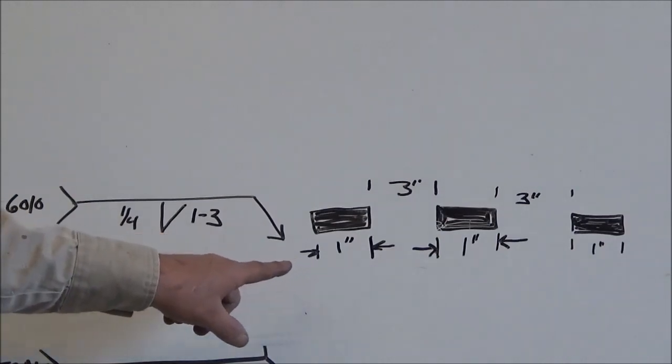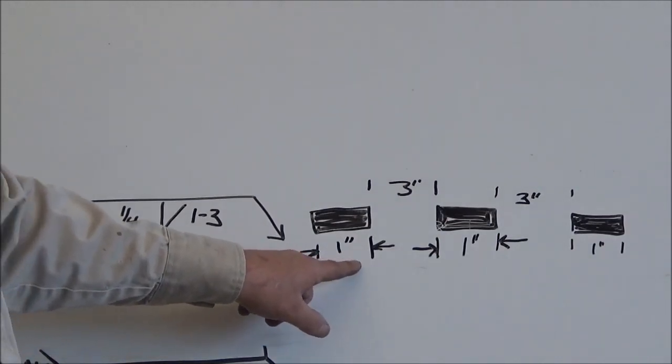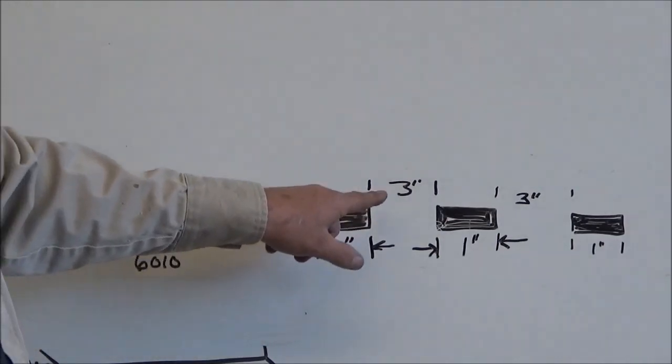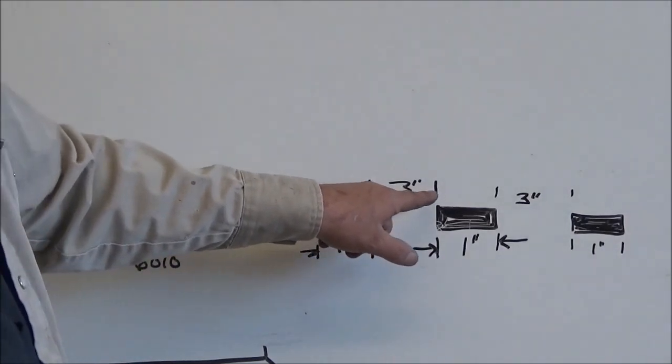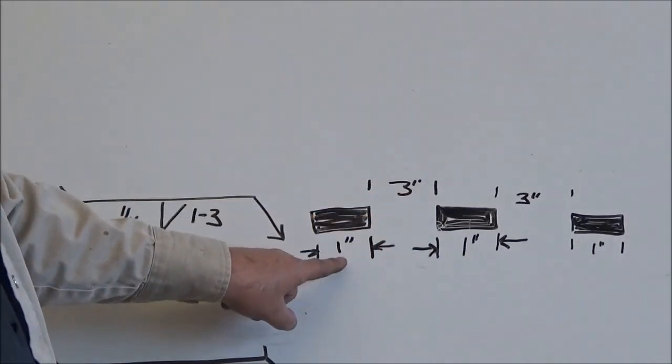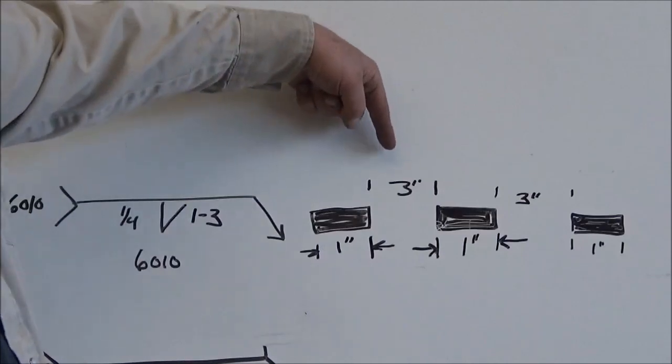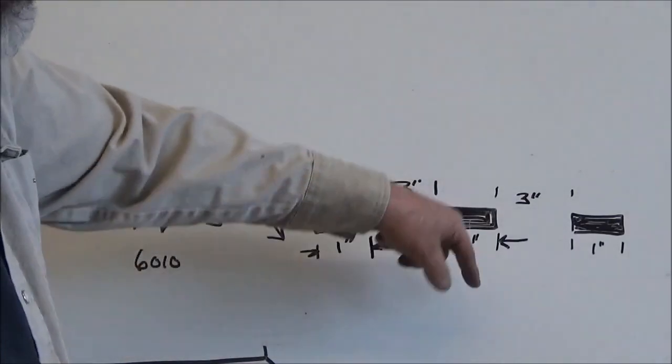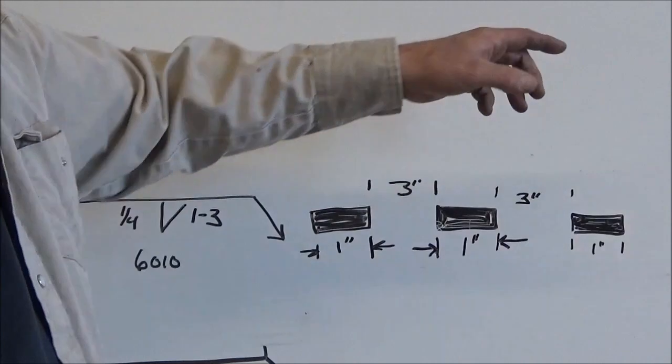Now, if you can take a look over here, I've drawn a little illustration. This is the one inch of weld and this is the spacing between the welds. So you've got one inch of weld, three inches of spacing in between, one inch of weld, three inches of spacing in between.